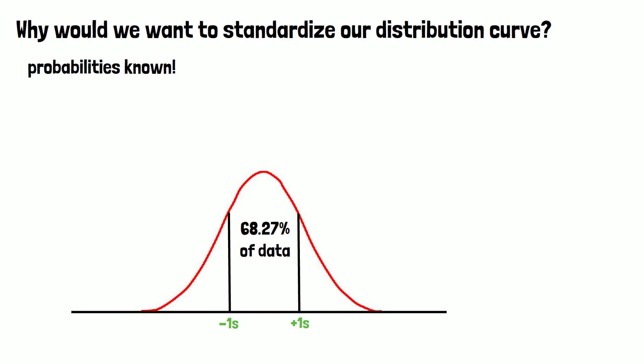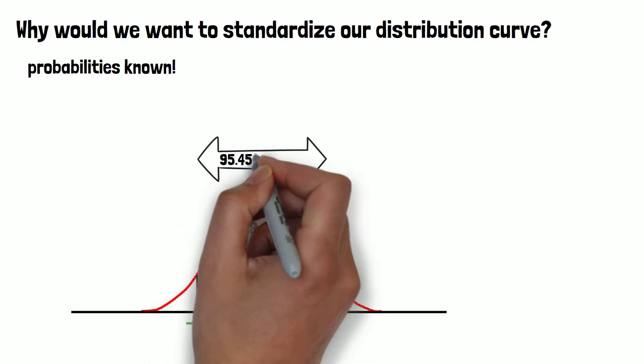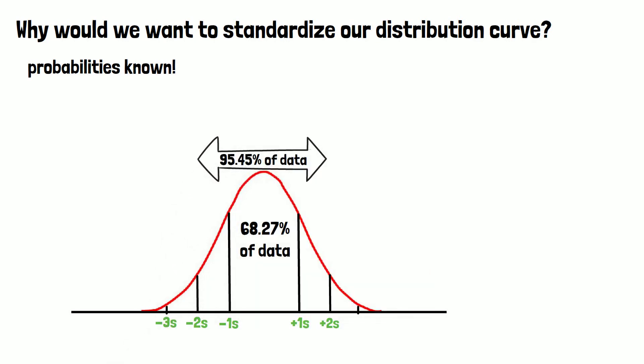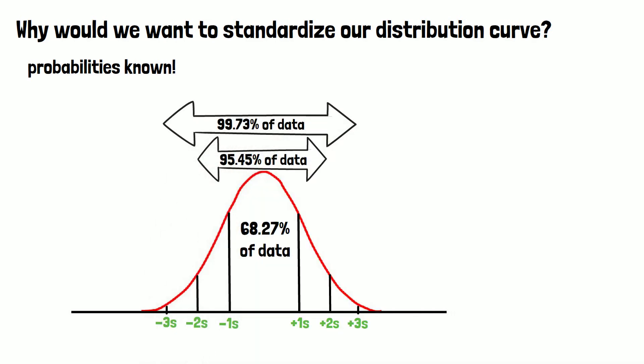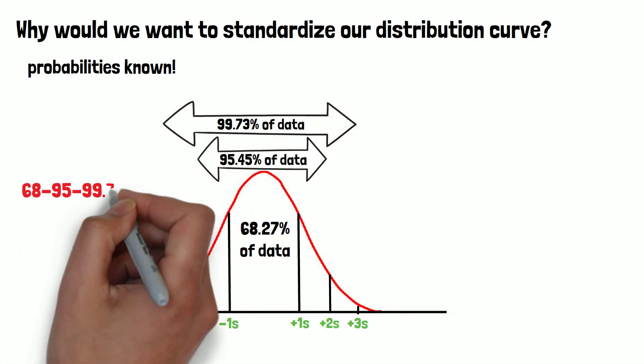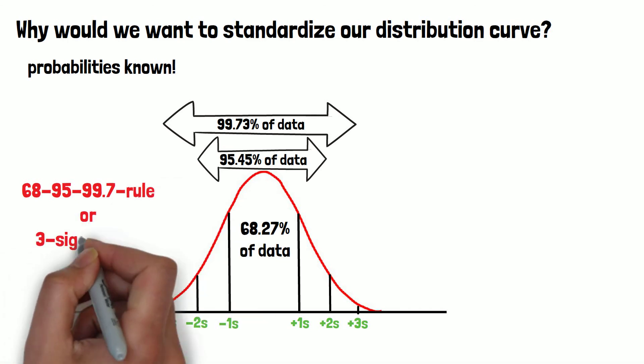account for 68.27% of the data. Within the reach of two standard deviations, we will find 95.45%, and within three standard deviations, we are covering 99.73% of the data. This is also known as the 68-95-99.7 rule, or three sigma rule.